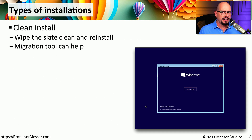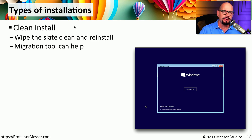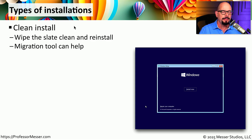Once you start the installation process, you also have a number of options on how you would like to install those files onto the system. One very common approach is to perform a clean install. This means we're going to wipe everything in that partition and completely reinstall the operating system. When you're done with a clean install, none of the previous files that were on that system will remain because you are deleting everything and starting over from scratch.